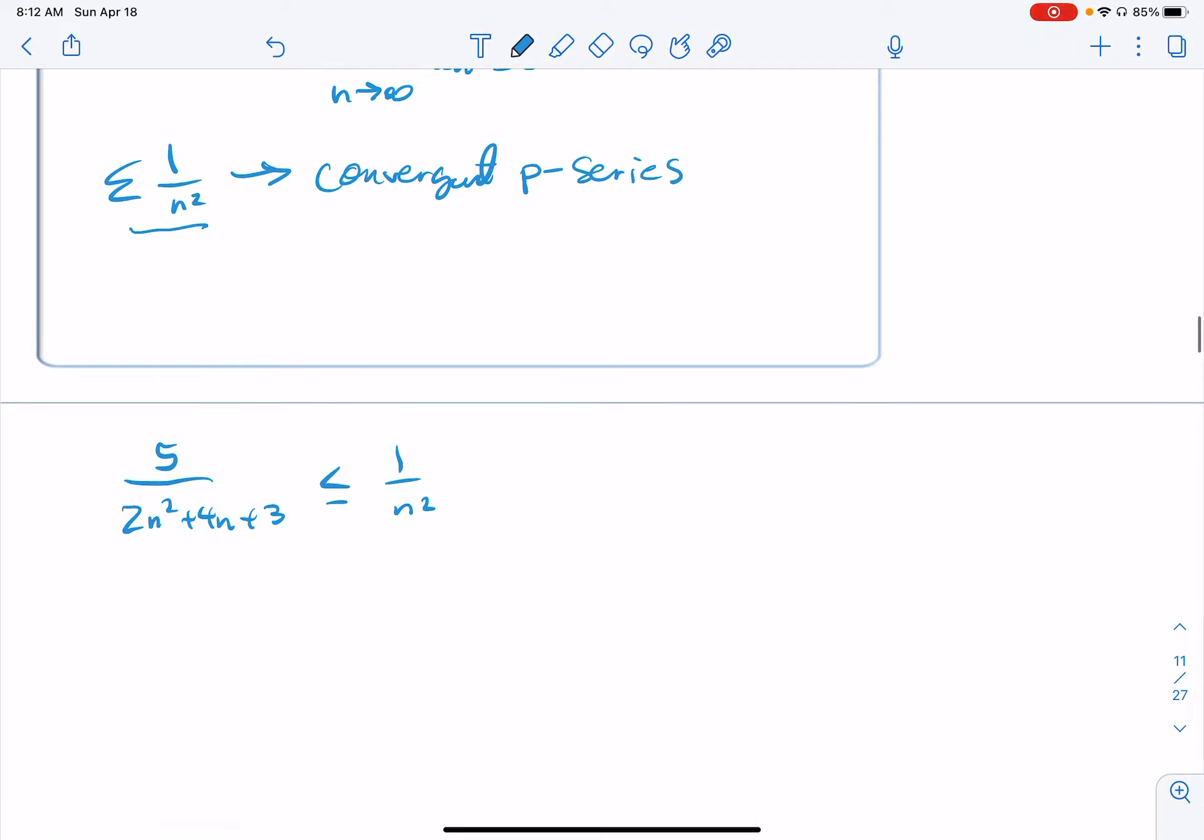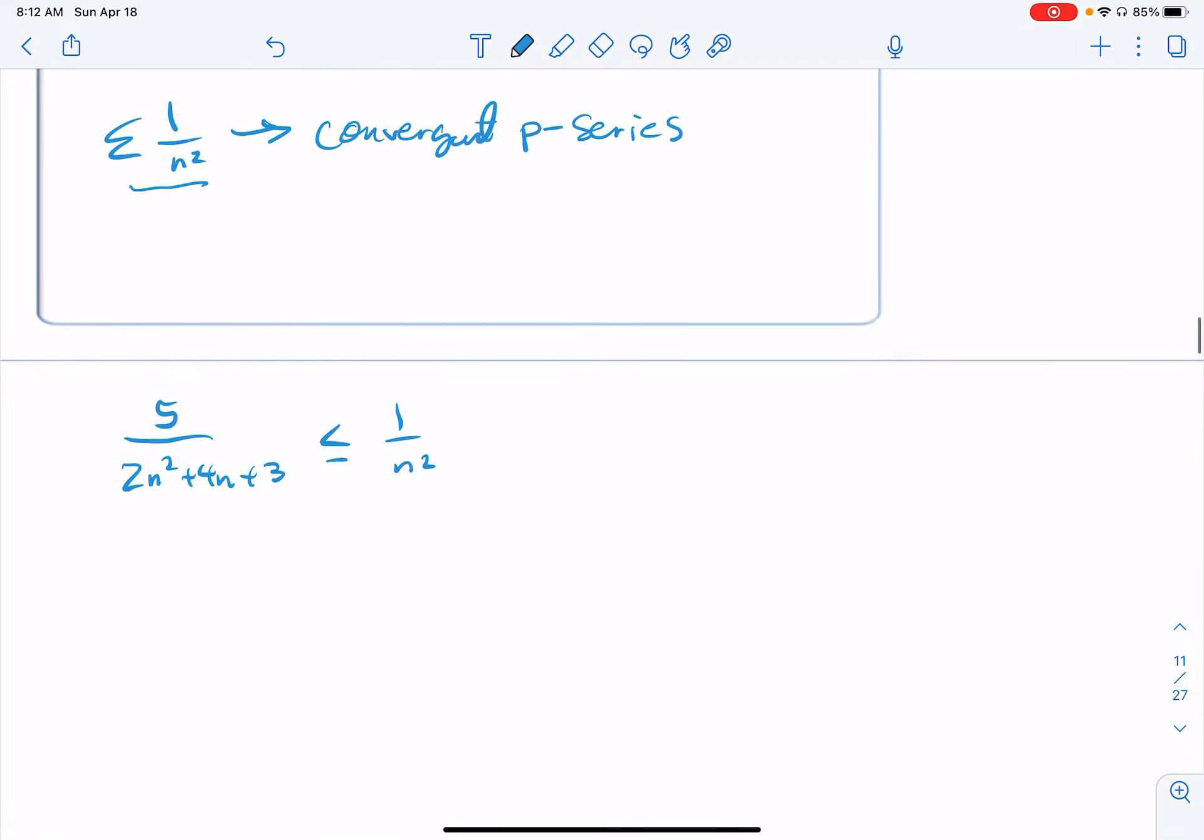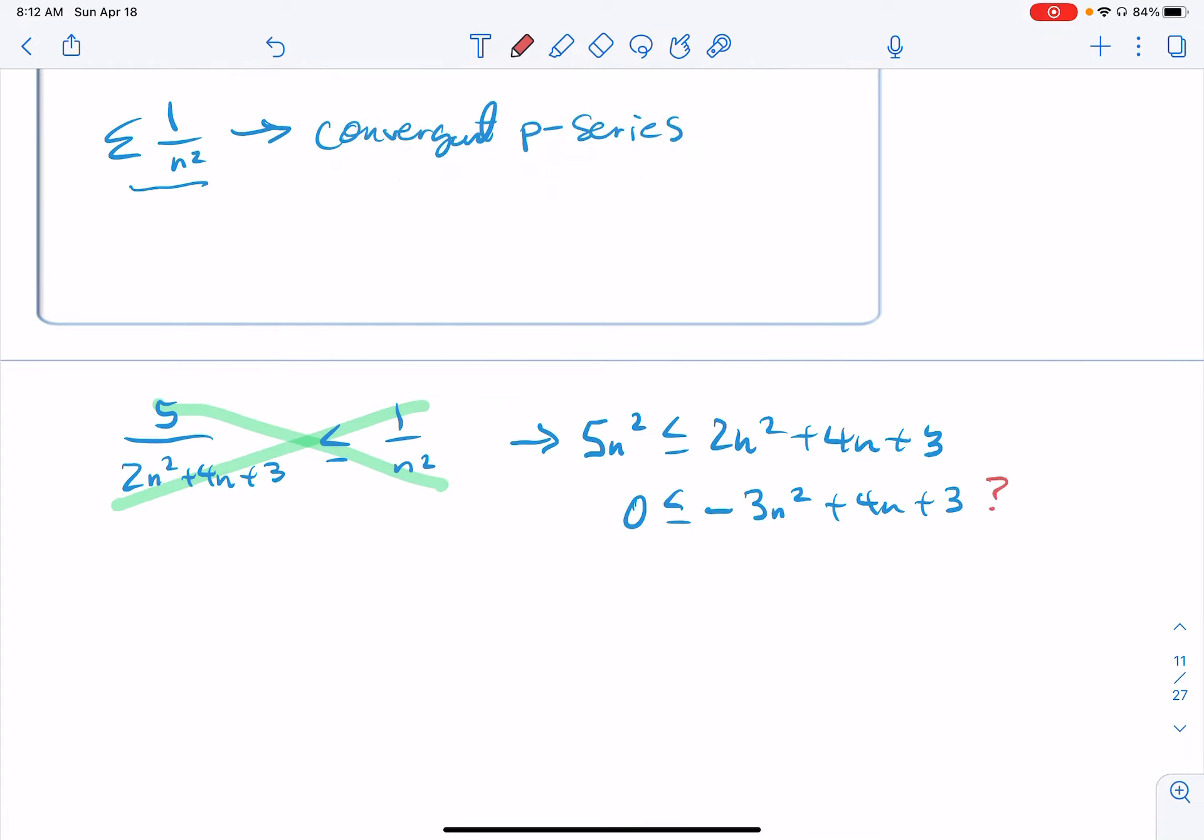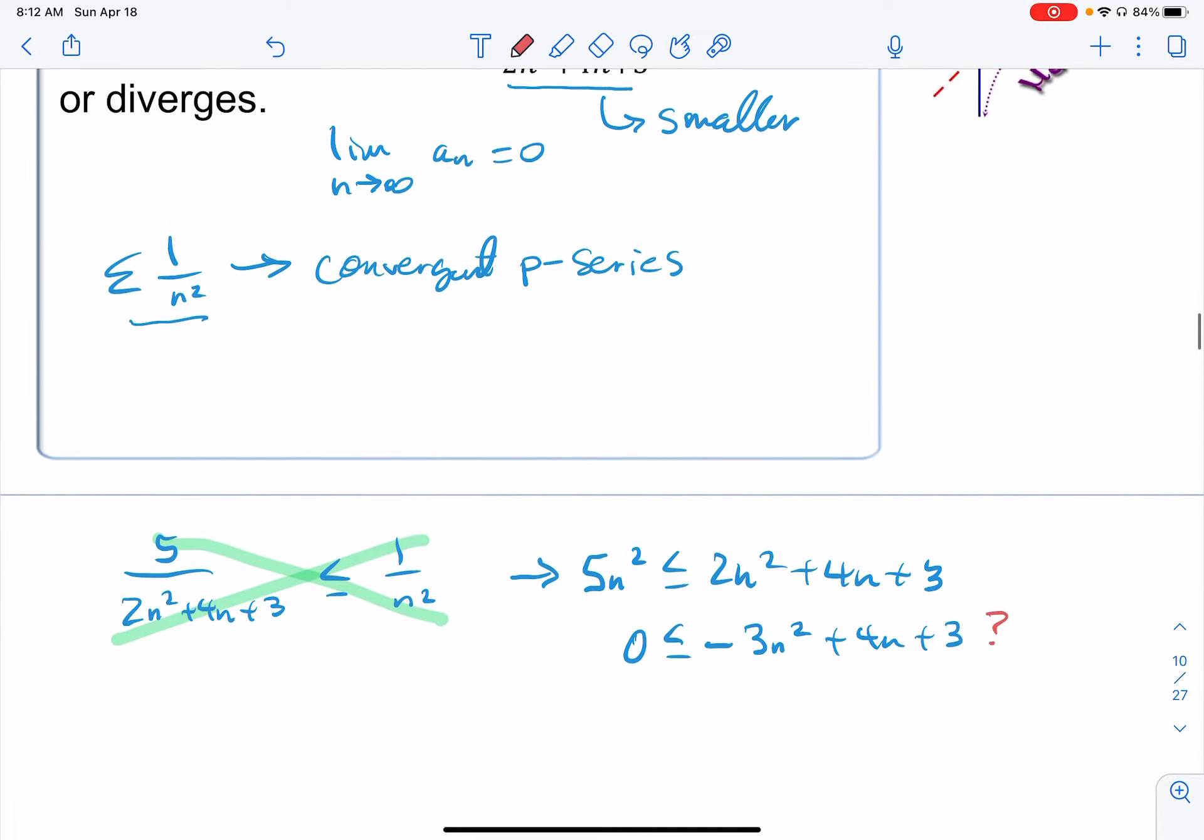These look way different. So let's cross multiply. Since everything is positive, we're going to be in good shape here, not to switch the inequality. I have 5n² is that less than or equal to 2n² + 4n + 3? Again, I don't know. So maybe I subtract this 5n² over to the other side. 0 is less than or equal to -3n² + 4n + 3? I don't know. So this is not an inequality that I can necessarily establish here. So I need to go back to the drawing board.